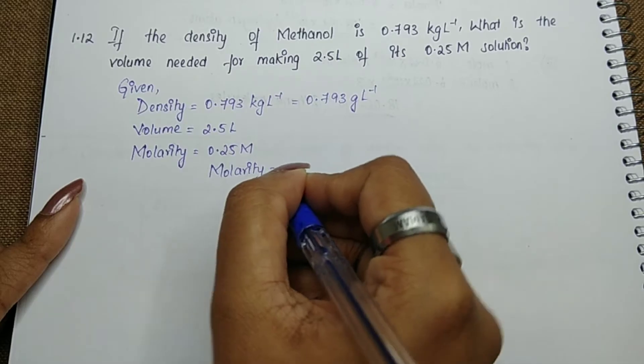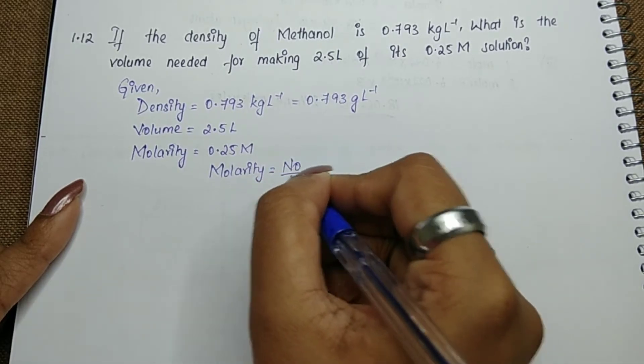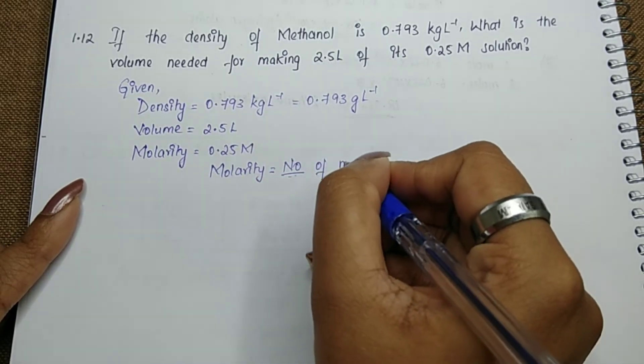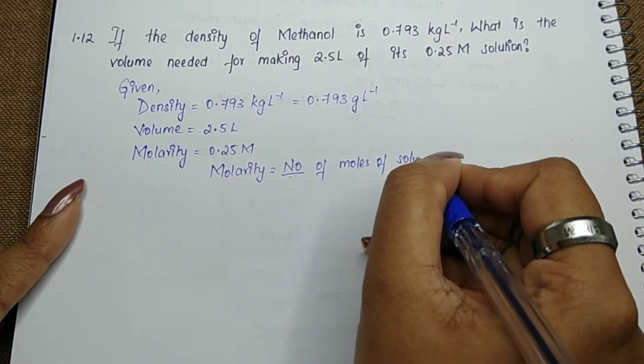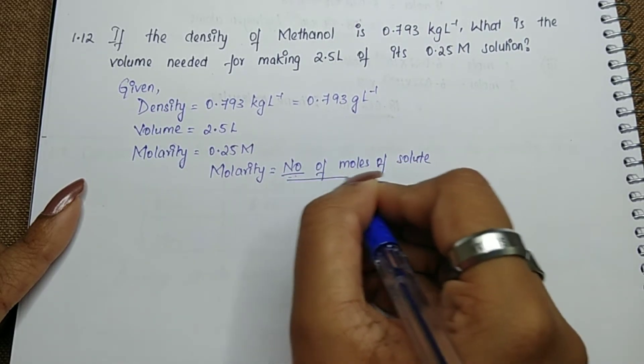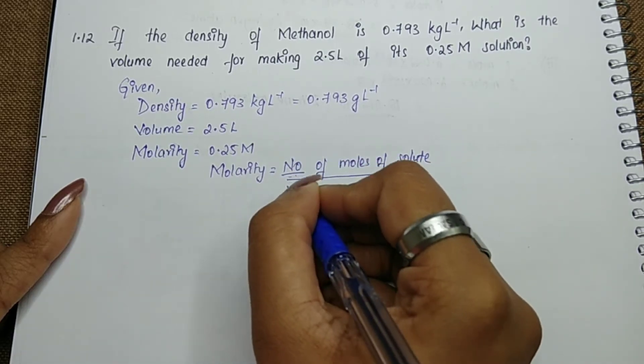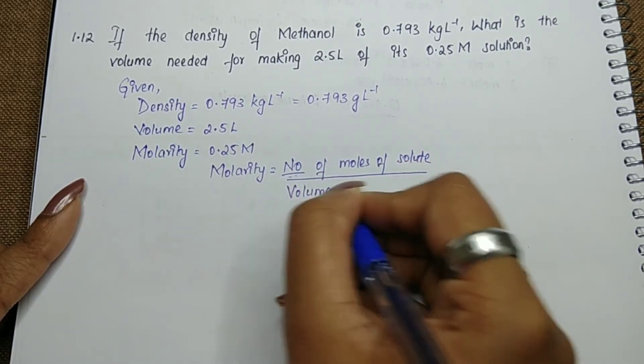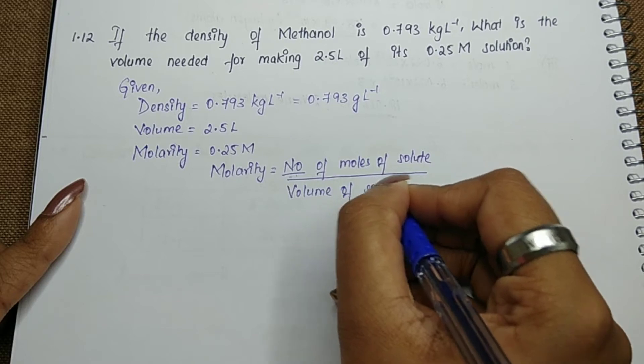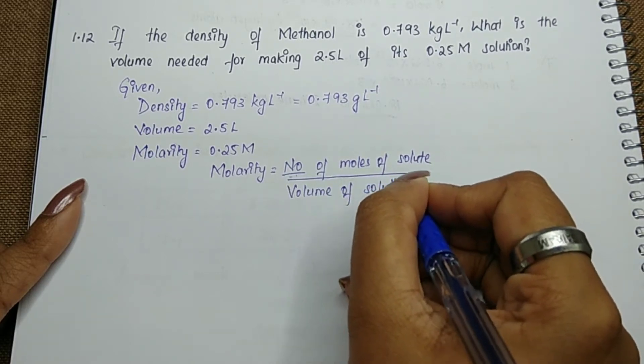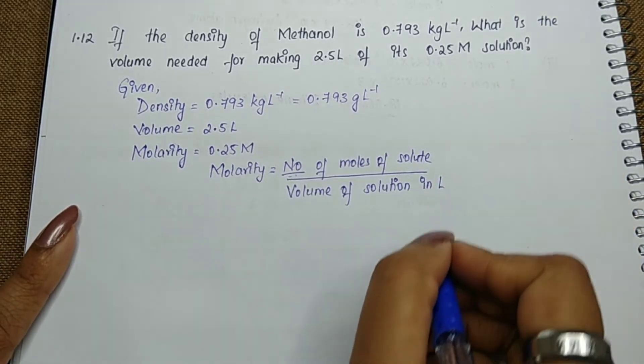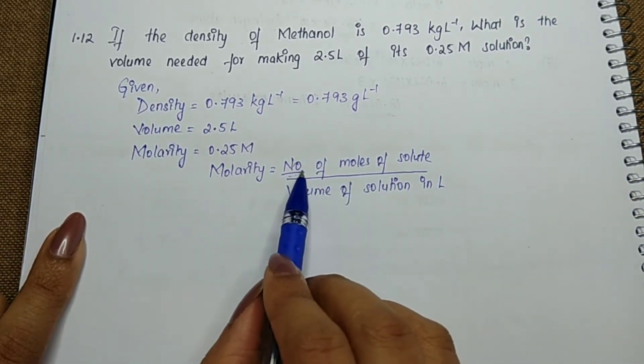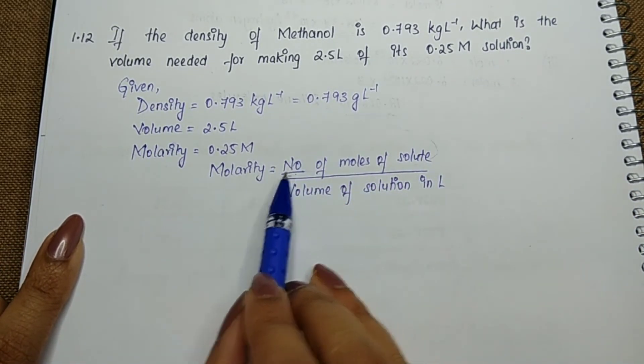Molarity is equal to number of moles of solute divided by volume of solution in liters. This is the formula for molarity, and we are going to solve this to find out the number of moles we need.